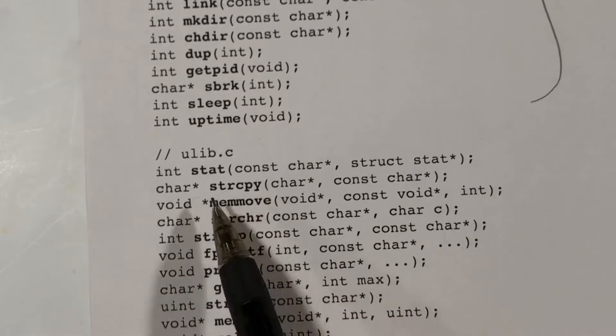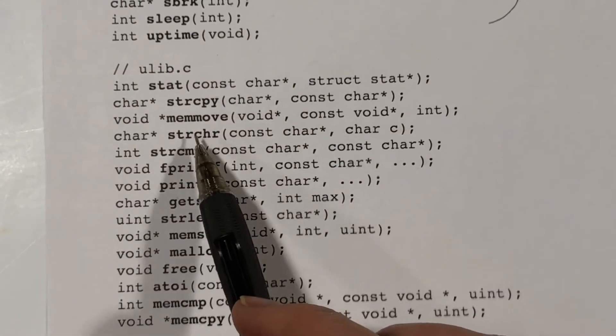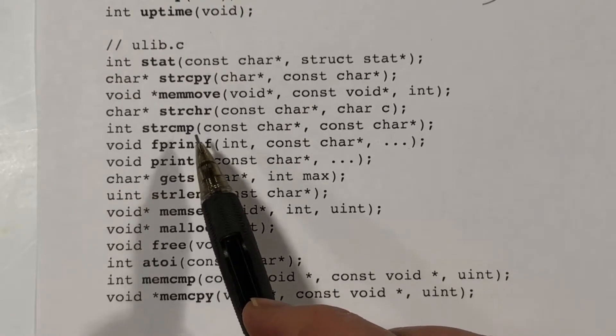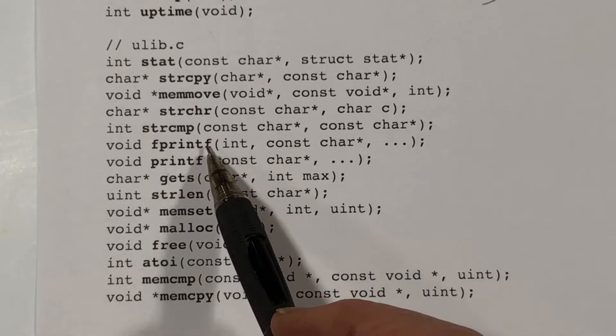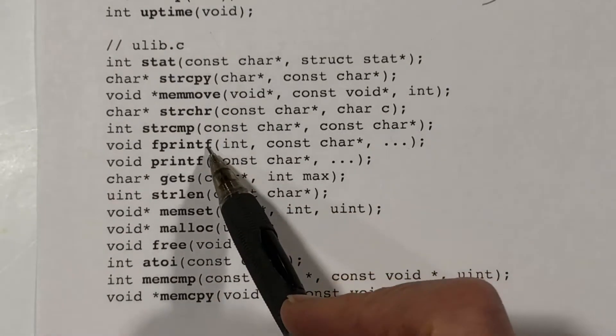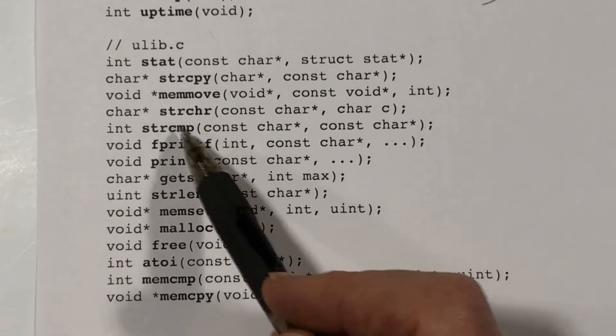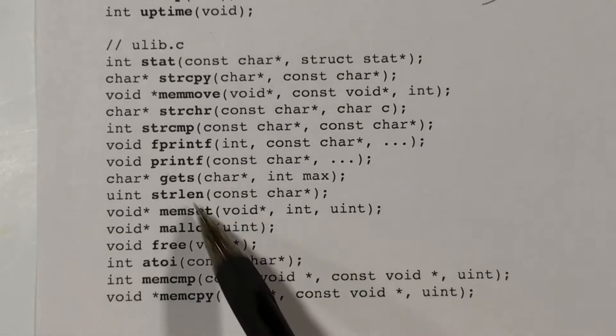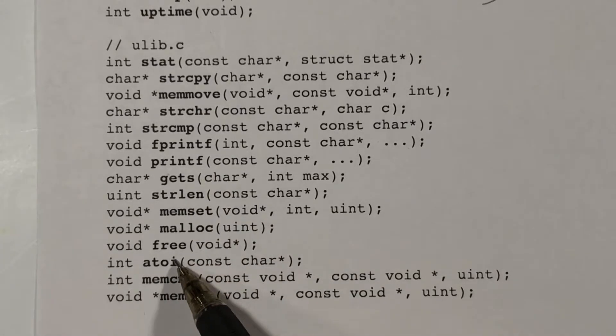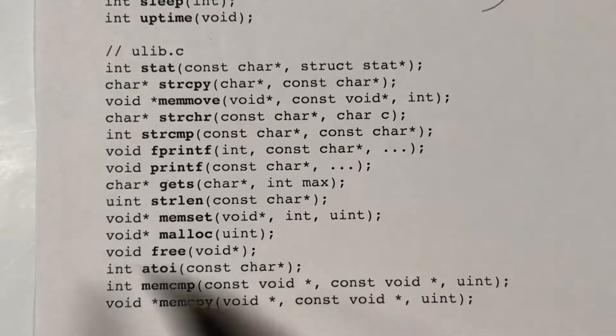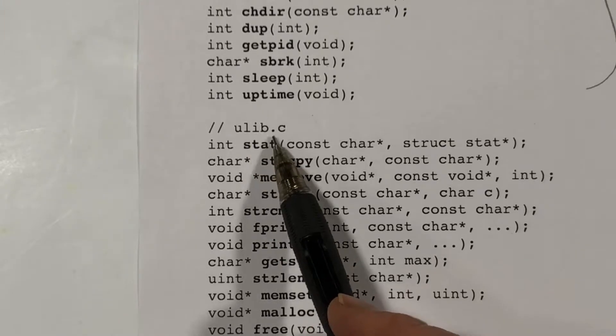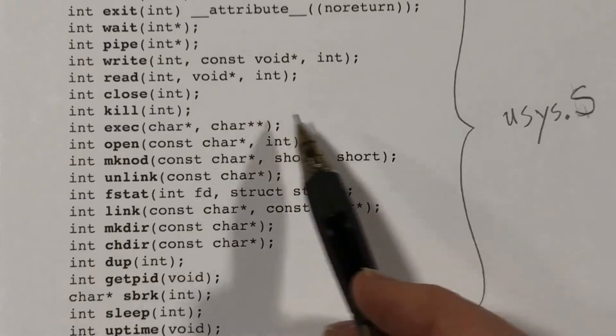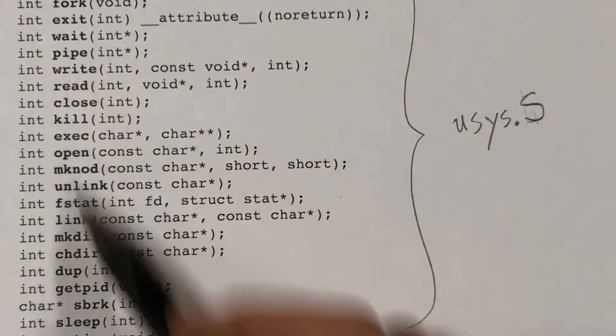We also see function prototypes for the library functions. The xv6 system doesn't include a whole lot of library functions. A normal operating system would have hundreds of functions, but we do see prototypes for fprintf, printf, some string functions like string length, and we see a2i and some other things. We're not going to look at the code for these right now, but these are in a file called ulib.c. We're more interested in the function code, functions for these system calls.